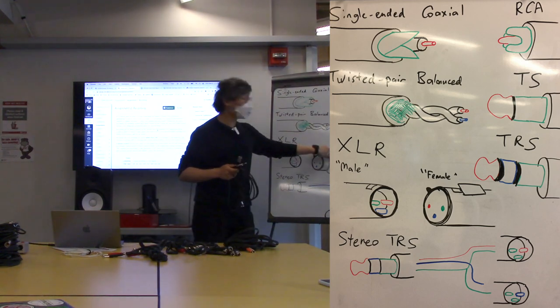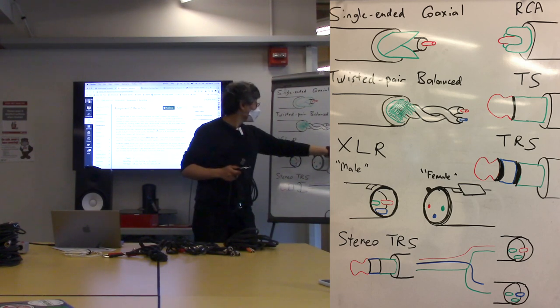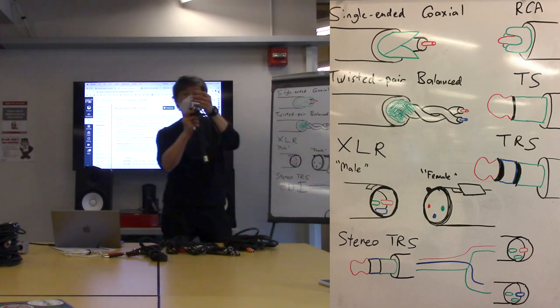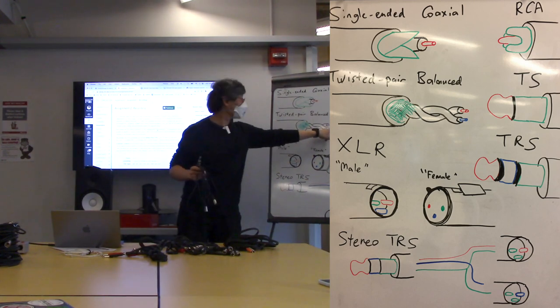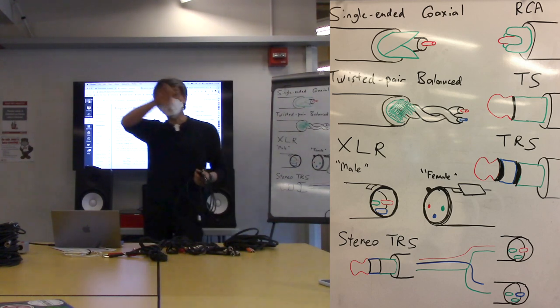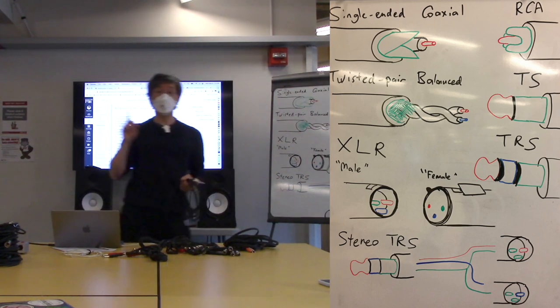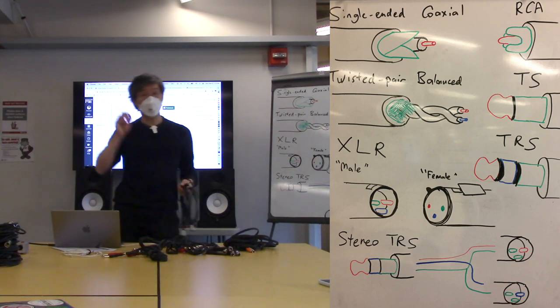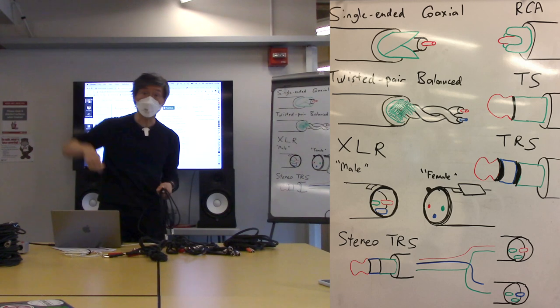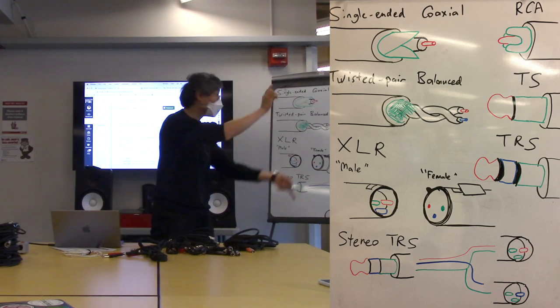The tip is still carrying a signal, but in the middle we have this thing called the ring. And that is actually carrying the same signal as the tip, only inverted. So where the tip is sending a signal that's going to positive voltage, the ring is going to be sending exactly the same signal, negative voltage.